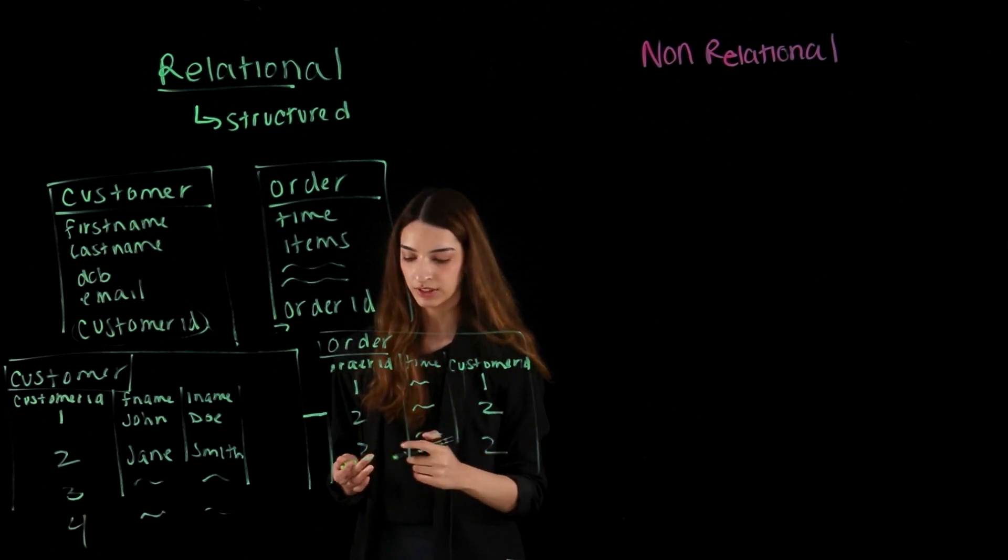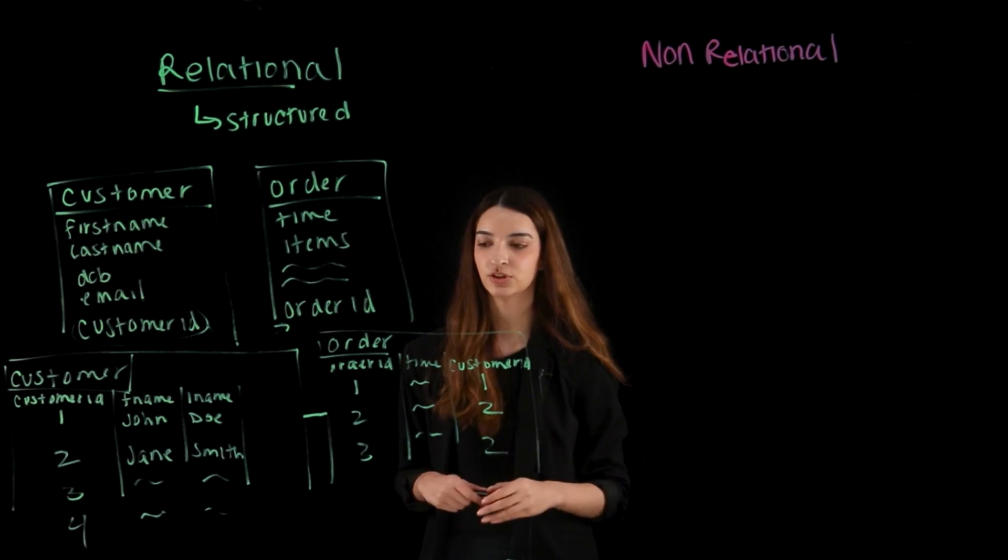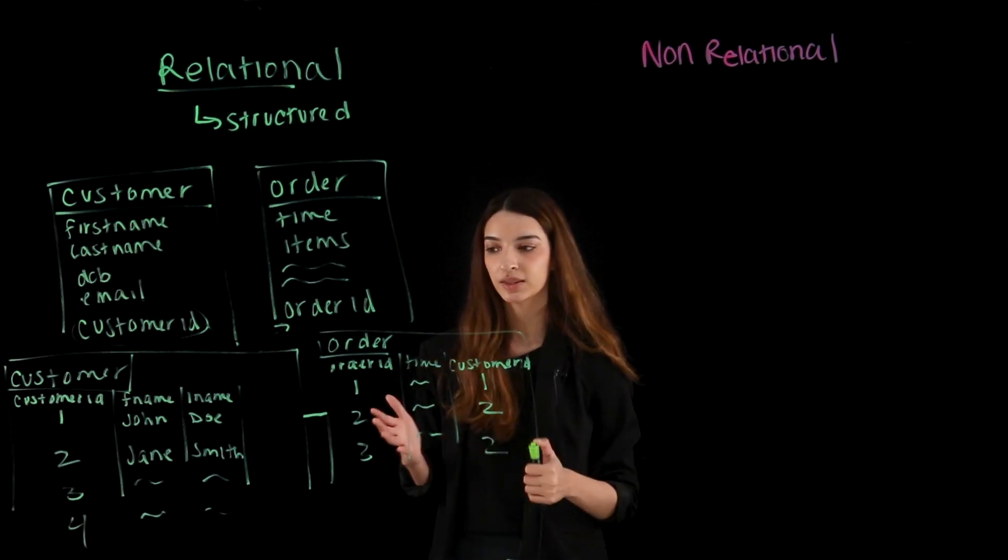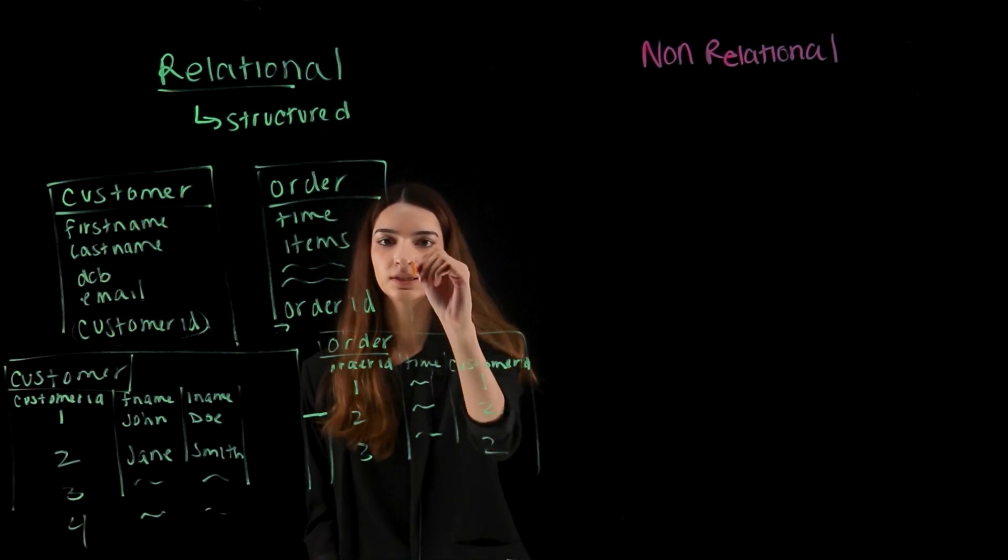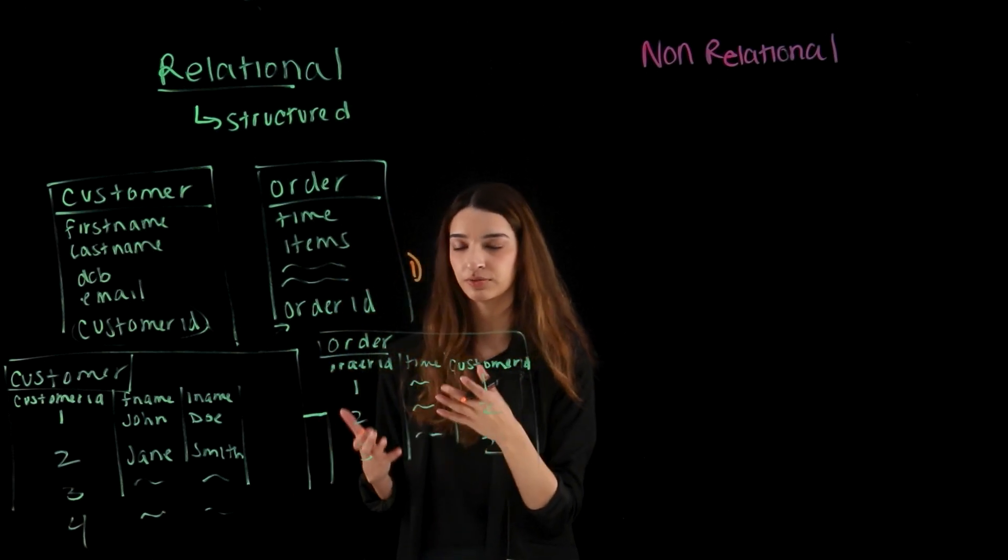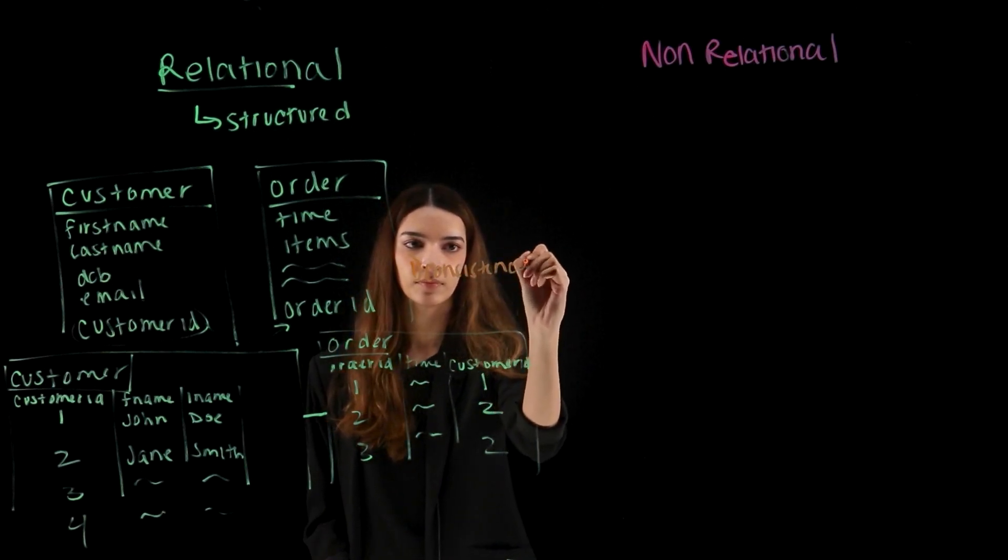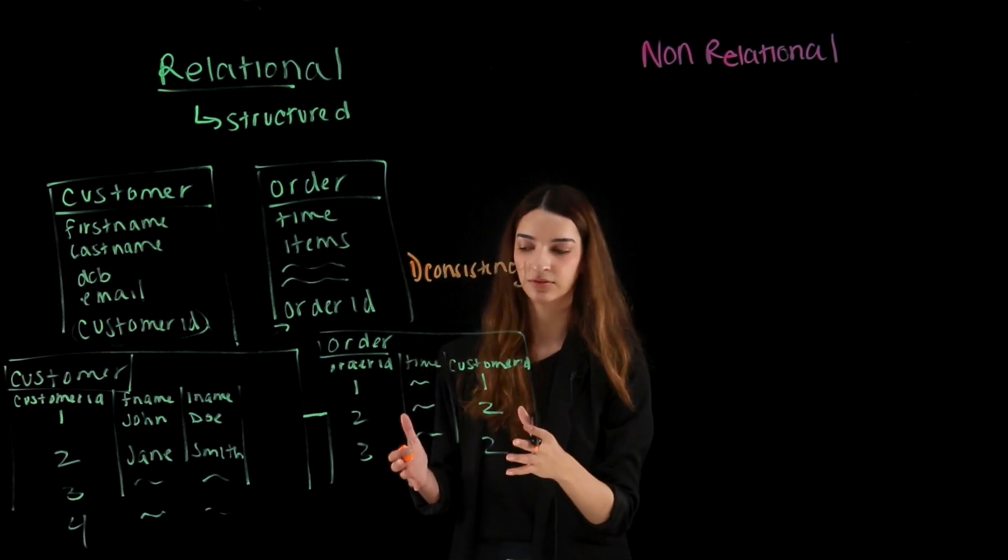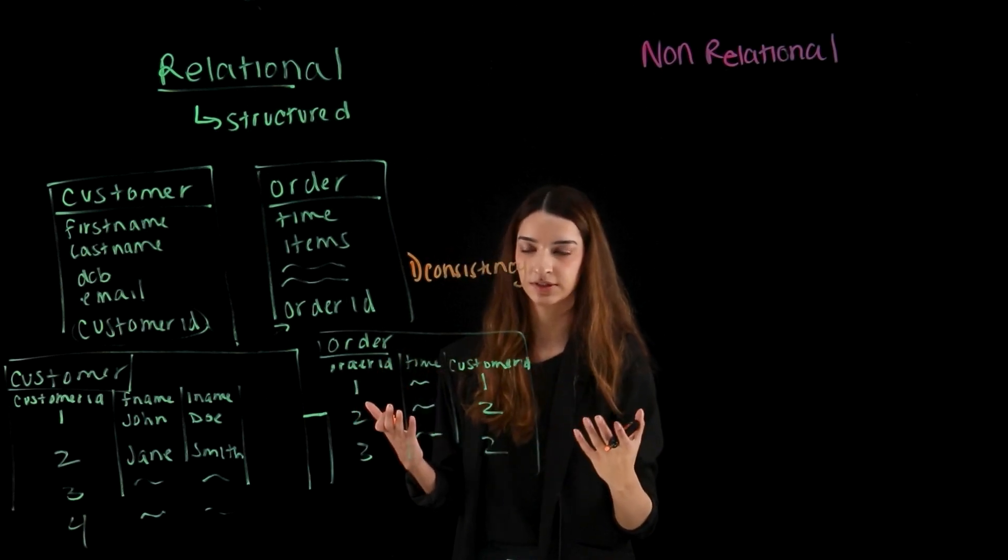So as we can see with relational databases, this is a very structured way to view the information that's coming into a company. But with that, there's a lot of benefits that come in. So one of them is that the structure really ensures data consistency. And you can see that all the data that we have over here is very consistent, right? We can see that it's easy to manage that data and easy to get an overview of what is in your database.